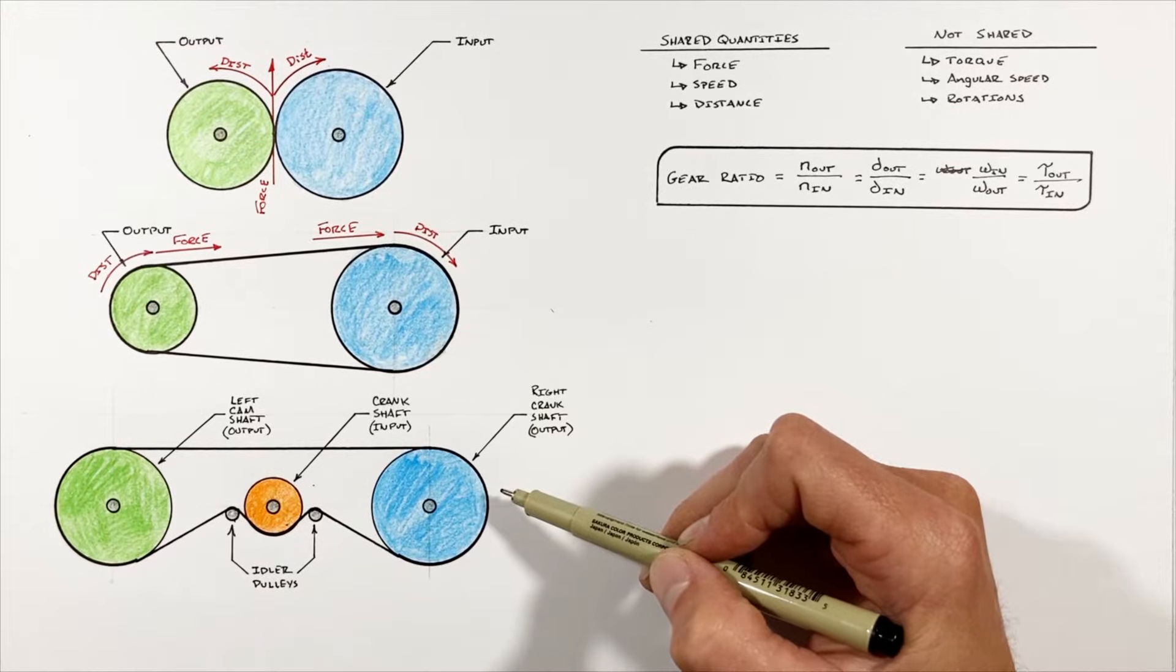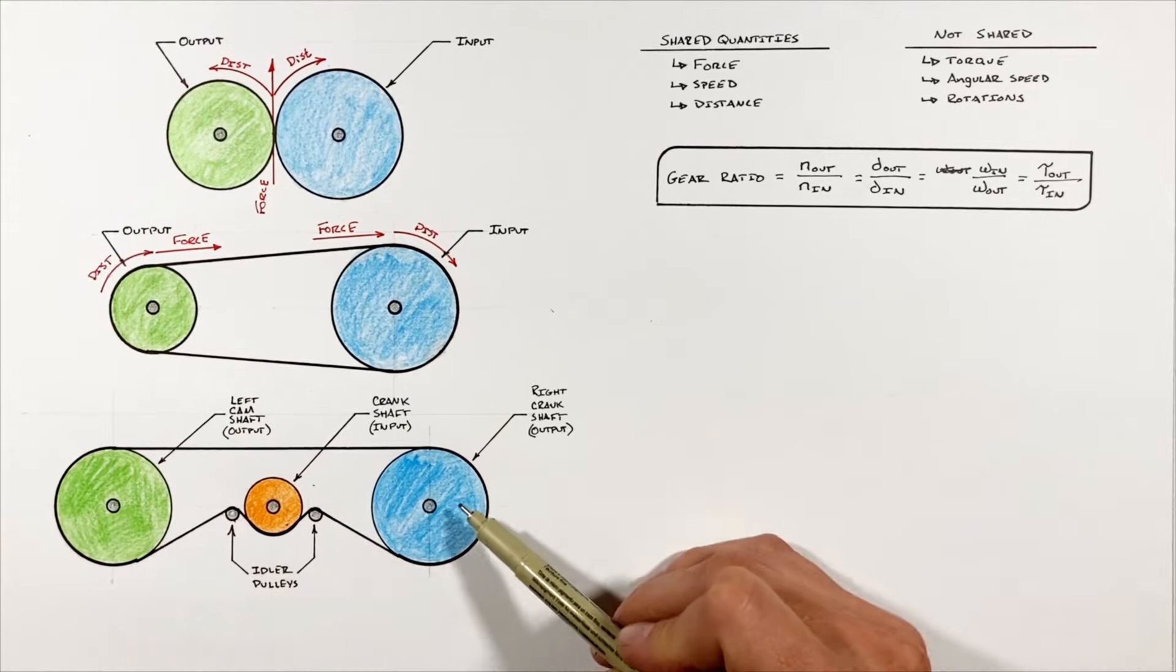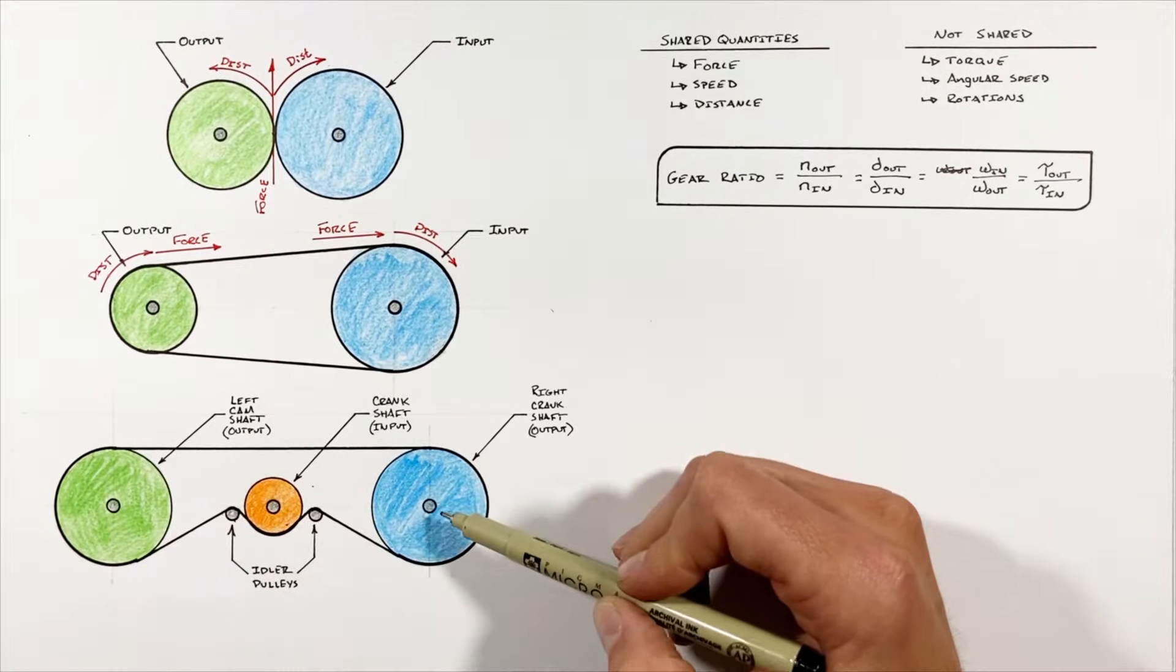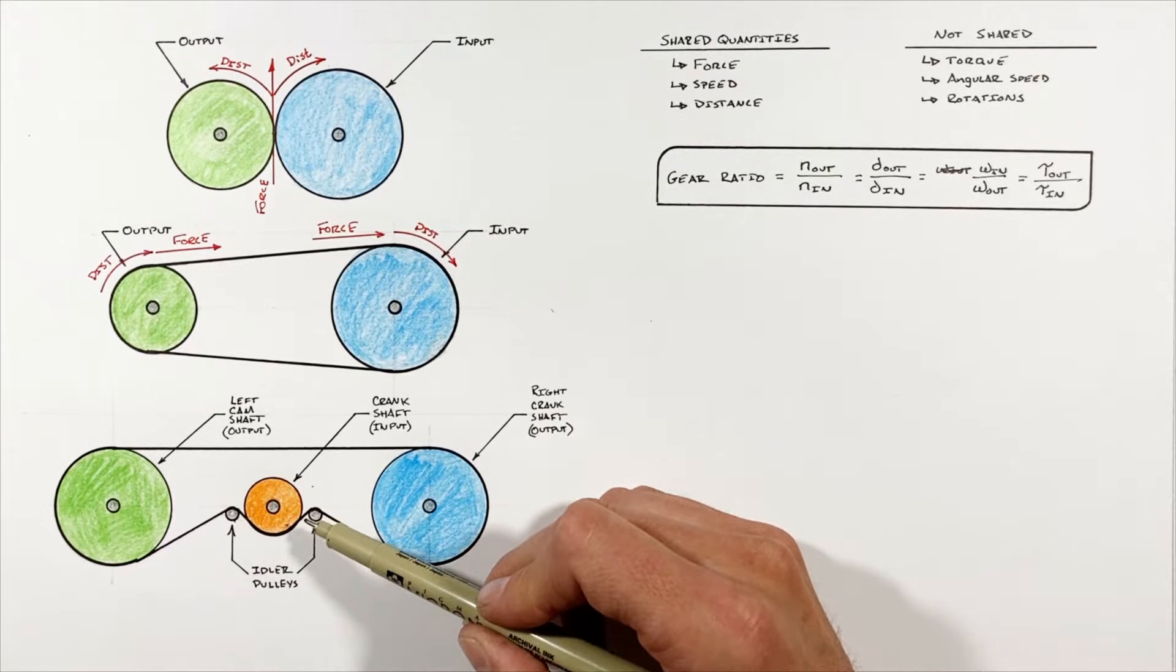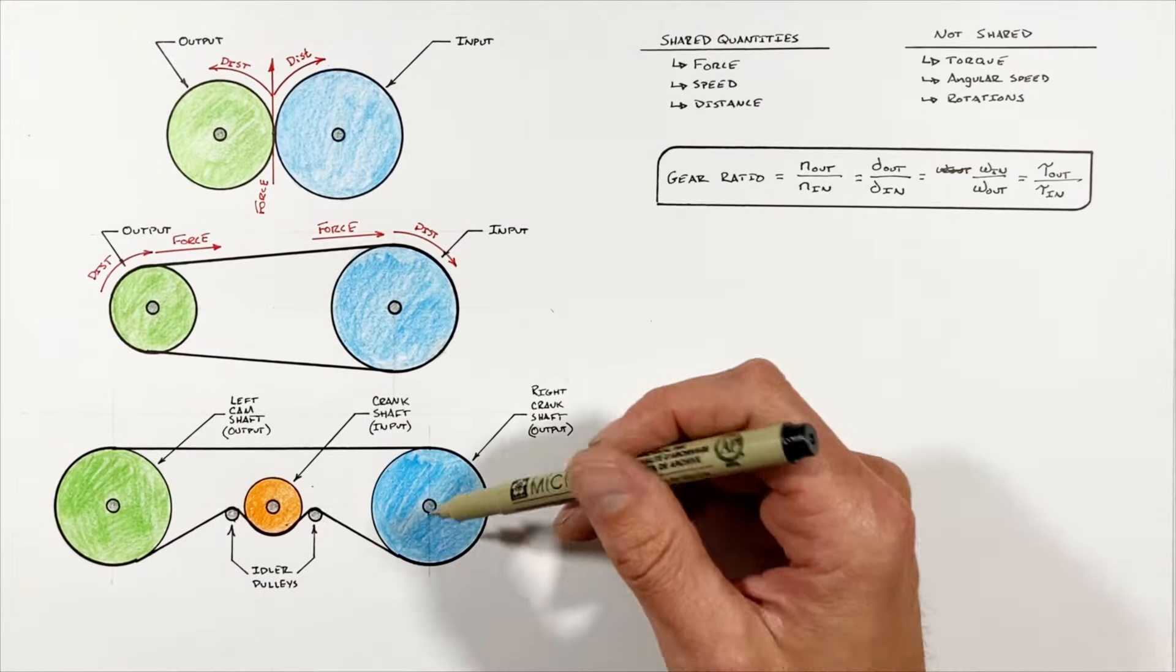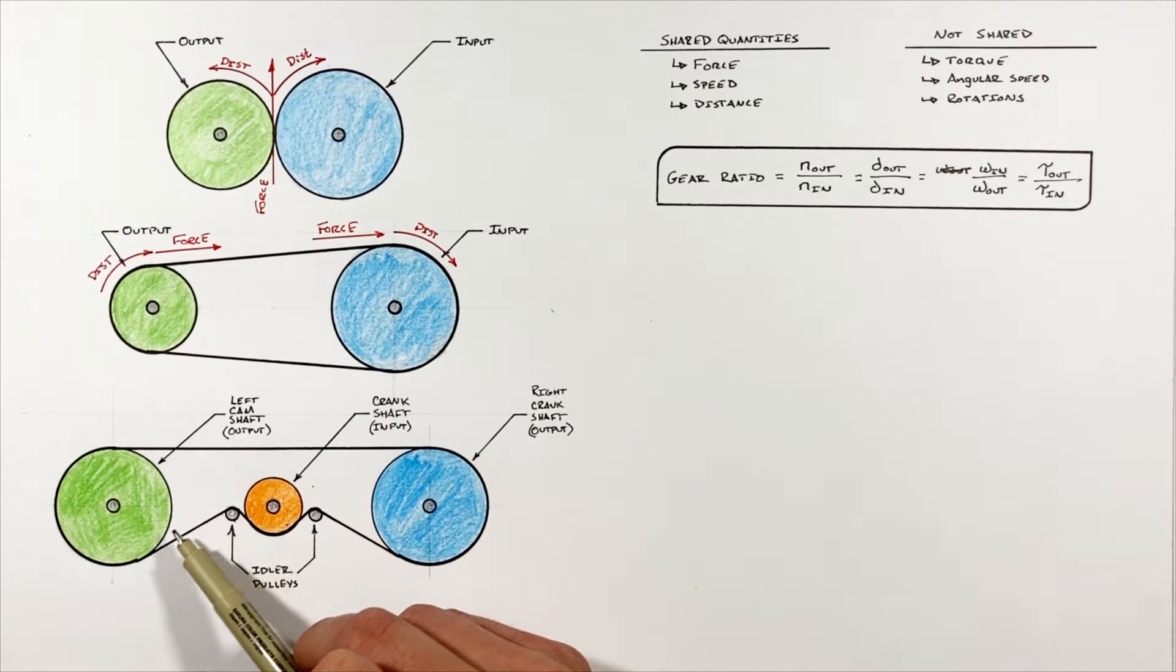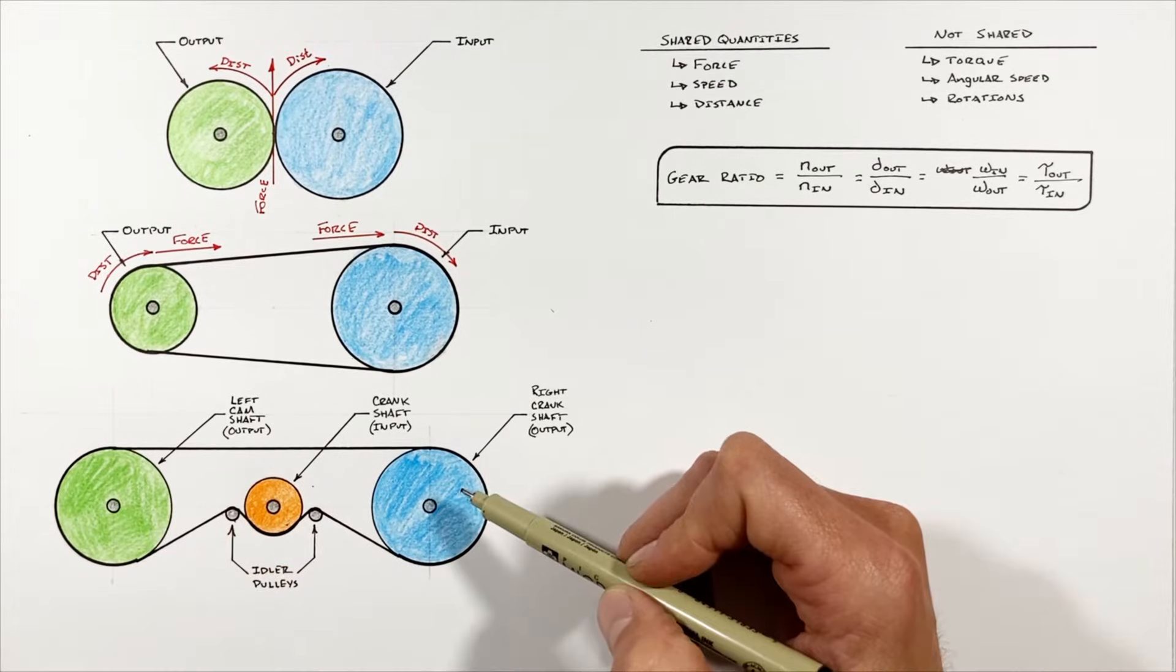Here we have a timing belt layout for a typical automobile engine. Here's the crankshaft which acts as the input, and here are the two different camshafts which act as the output shafts within the system. And we can relate the rotation of each of these output shafts to the rotation of the input crank using gear ratio. But here's the big catch: when multiple output pulleys are involved like we have here, we cannot apply our equation for torque using gear ratio. And that's because the force, or really the energy which is provided to the belt, is not always going to be distributed evenly to the two output shafts.